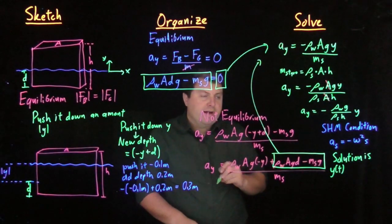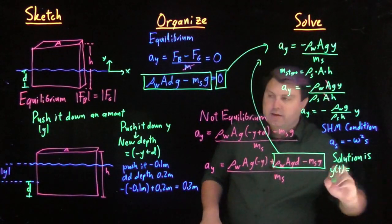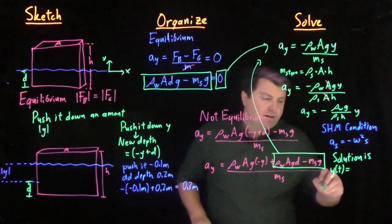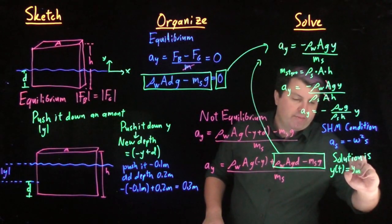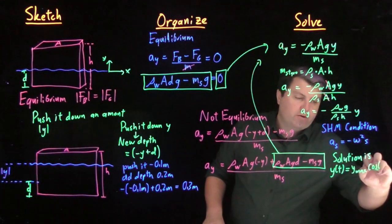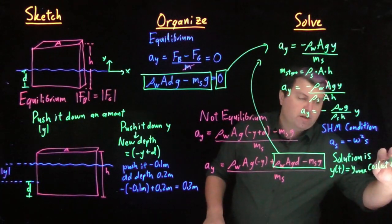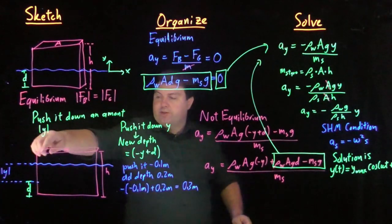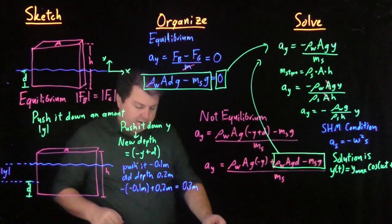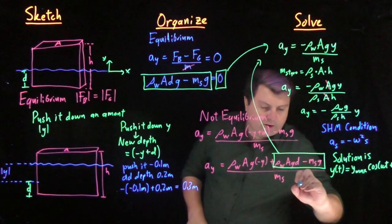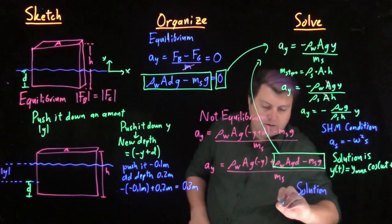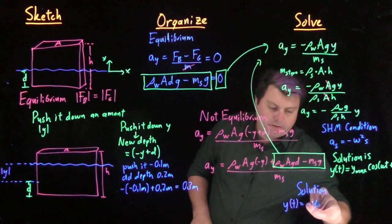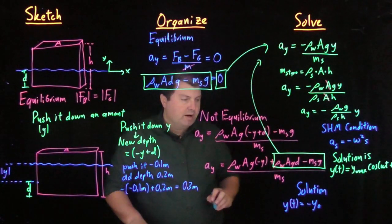That our y as a function of time, our deviance from this depth d, is equal to some sort of y_max cosine of ωt plus the angle φ. In this case, we are starting with a negative y, so we would have our solution: y(t) is equal to negative some initial y...